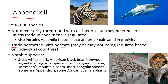All those bags shown are pangolin scales. Pangolins are small scaled mammals — their hair is modified into scales made of keratin. Their scales are used in traditional Chinese medicine and there is very high demand for them, so much so that they are being poached to the brink of extinction. Notable Appendix Two species include the great white shark, American black bear, ironwood, big leaf mahogany, emperor scorpion, green iguanas, Hartman's mountain zebra, some pangolin species, and some populations of the African bush elephant.